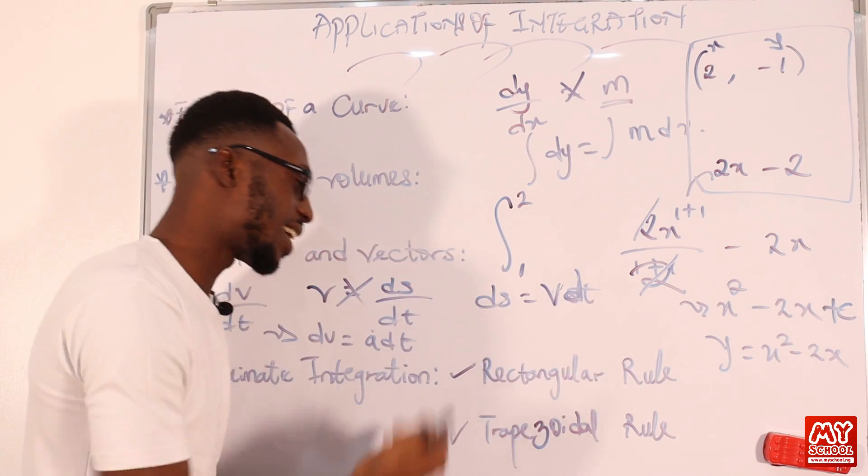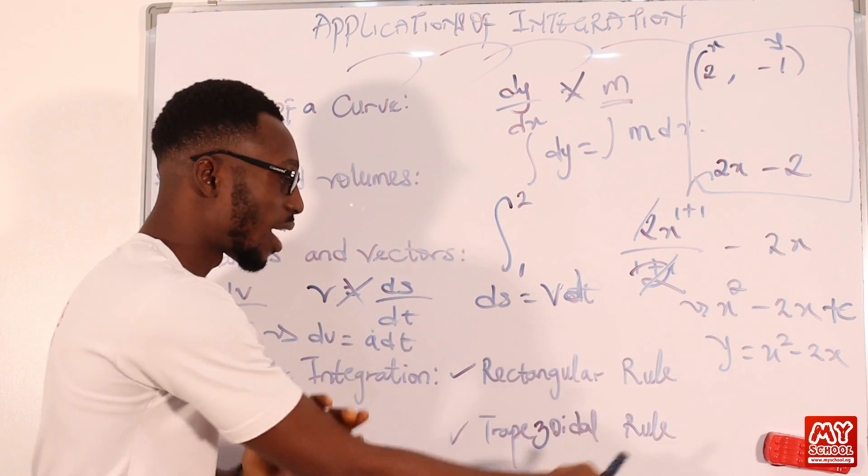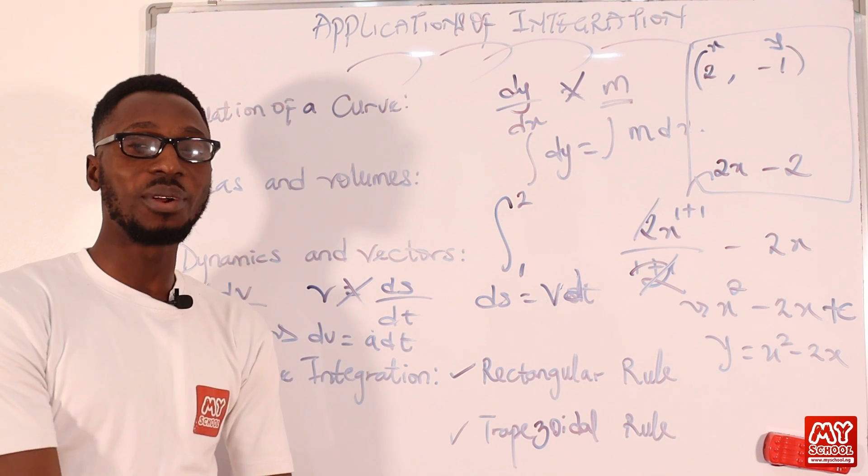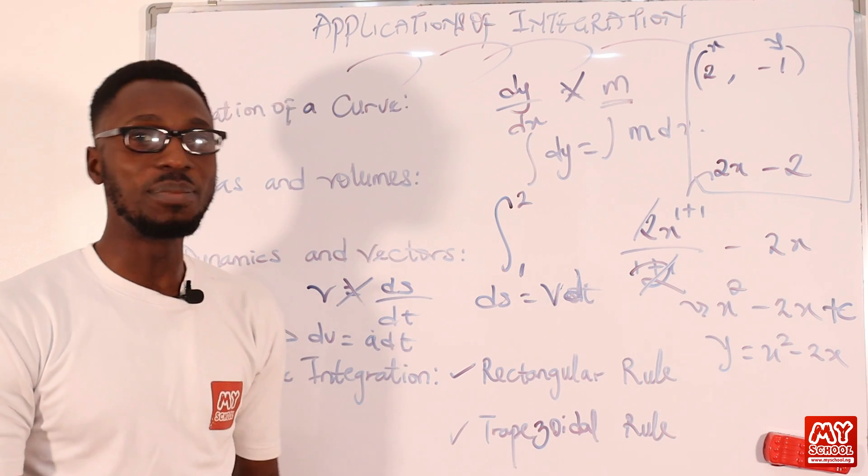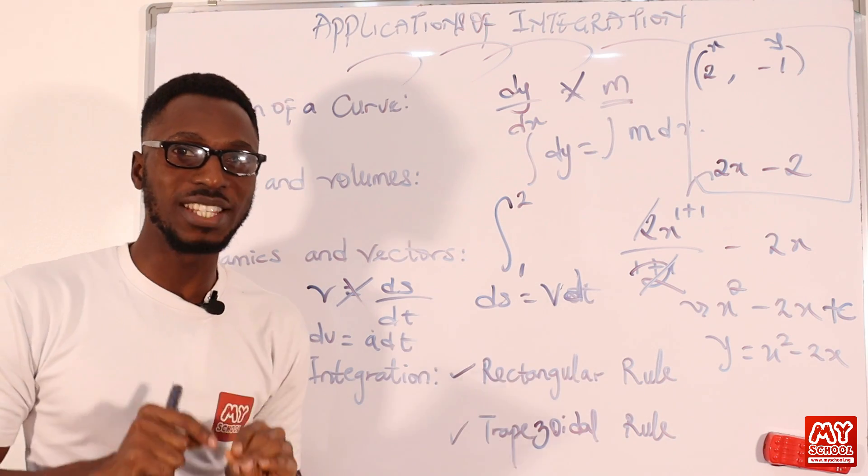When you now divide your strips in the form of trapezium, that is where you have your trapezium rule or the trapezoidal rule. And of course, we have Simpson's rule that will actually give you the same results as well. So much more are loaded in this particular video.